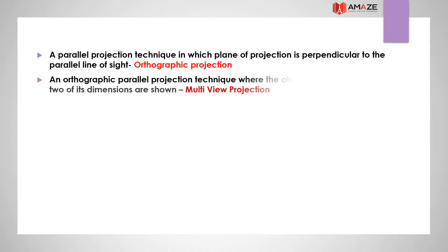An orthographic parallel projection technique where the object is oriented such that only two of its dimensions are shown is called multi-view projection. In multi-view projection, only two dimensions are shown in a particular view at a time.